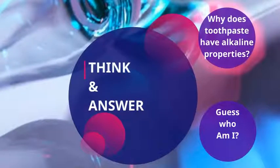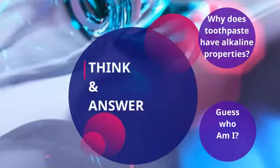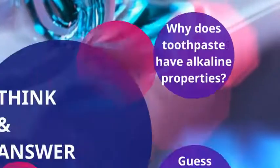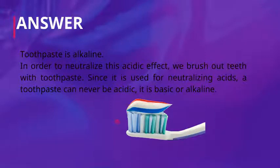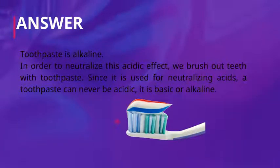Think and answer the questions displayed on the screen. Why does toothpaste have alkaline properties? The answer is: toothpaste is alkaline in order to neutralize the acidic effect when we brush our teeth. Since it is used for neutralizing acids, toothpaste can never be acidic — it is basic or alkaline.